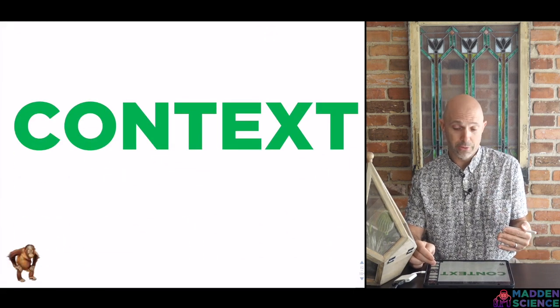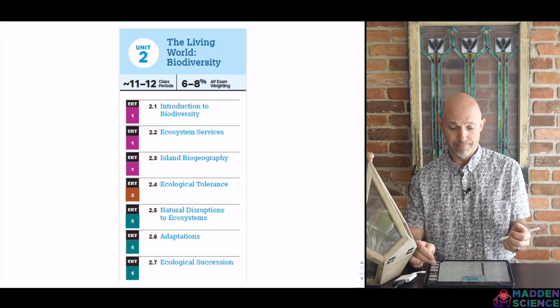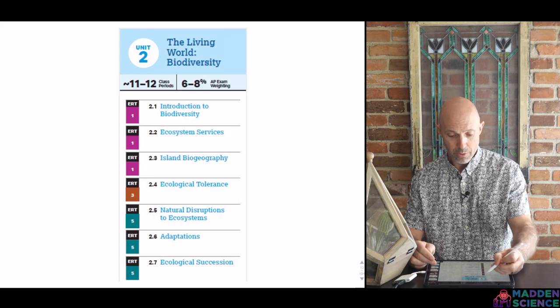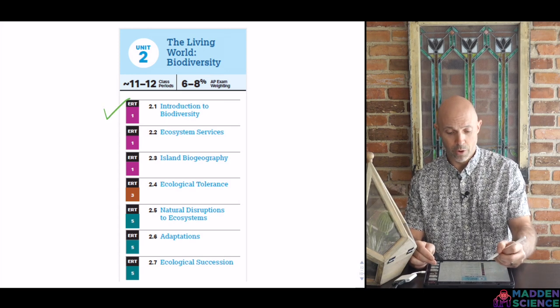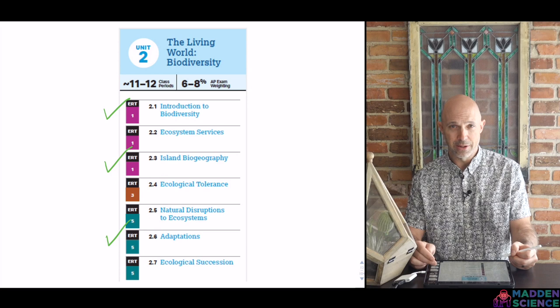It's all starting with our two main men, Charles Darwin and Alfred Wallace. Our context for our class right now in this video comes from AP Environmental Science, Unit 2, the Living World Biodiversity. We're looking specifically at 2.1 Biodiversity, 2.3 Biogeography on Islands, and 2.6 Adaptations.